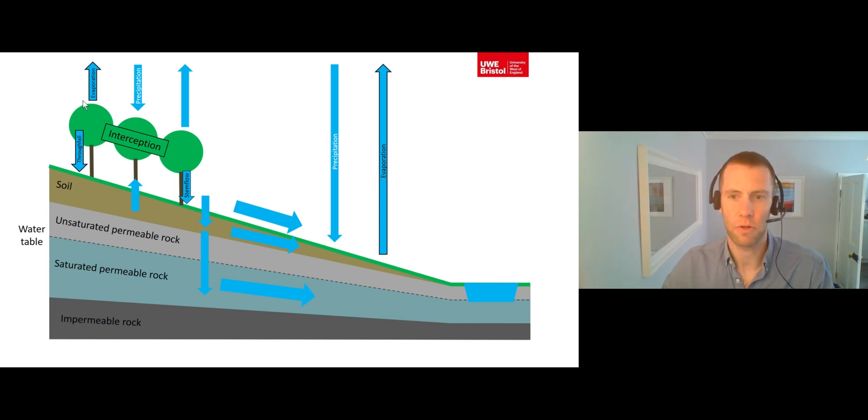Evaporation is when liquid water is converted into water vapour gas. As well as water that has been intercepted by vegetation, evaporation can also take place on other hill slope surfaces such as from soil and tarmac.